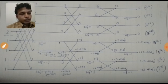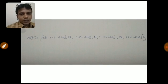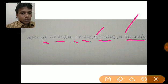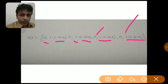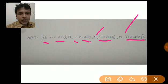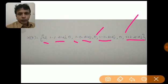After applying bit-reversal ordering, the final result is: X(k) = 12, 1−2.414j, 0, 1−0.414j, 0, 1+0.414j, 0, 1+2.414j. This is the same result obtained using the DIT algorithm, confirming that DIT and DIF both produce the same output with the same number of steps. FFT converges to the answer much faster than the discrete Fourier transform using this butterfly diagram. I hope this video was beneficial — kindly like, comment, share, and subscribe to our channel.